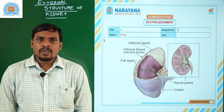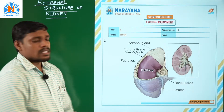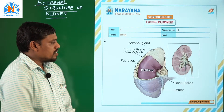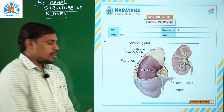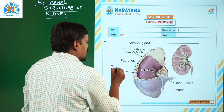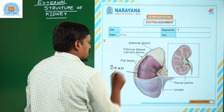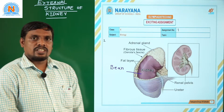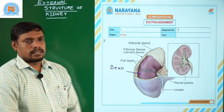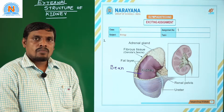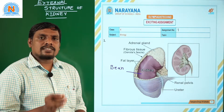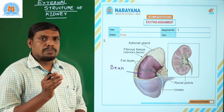If you look at the external morphology or external structure of human kidney, generally it looks like this. The kidney is a bean-shaped structure. As you know, a bean generally looks like this. So our aim is observation of external morphology of human kidney.